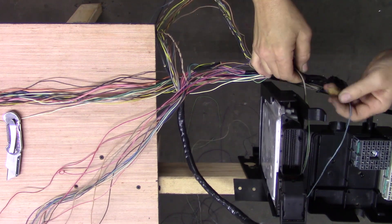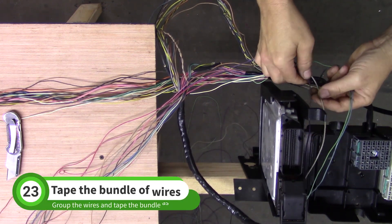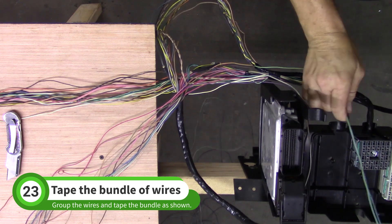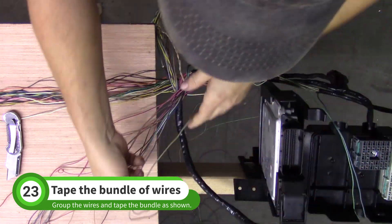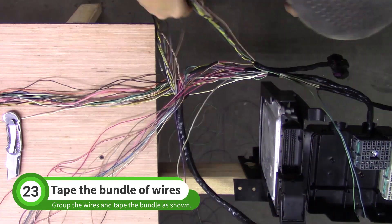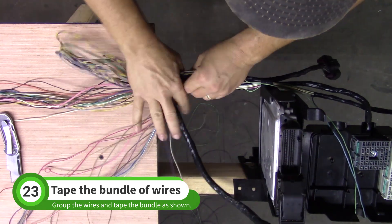Grab the loose wires from the fuse box housing and set the blue and green wires aside as shown. The other wires should be pulled to the thick bundle of wires. Group the wires and tape the bundle together.